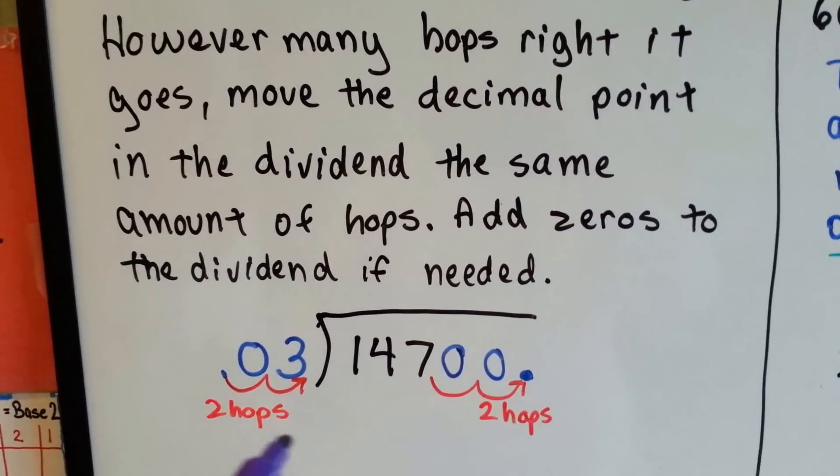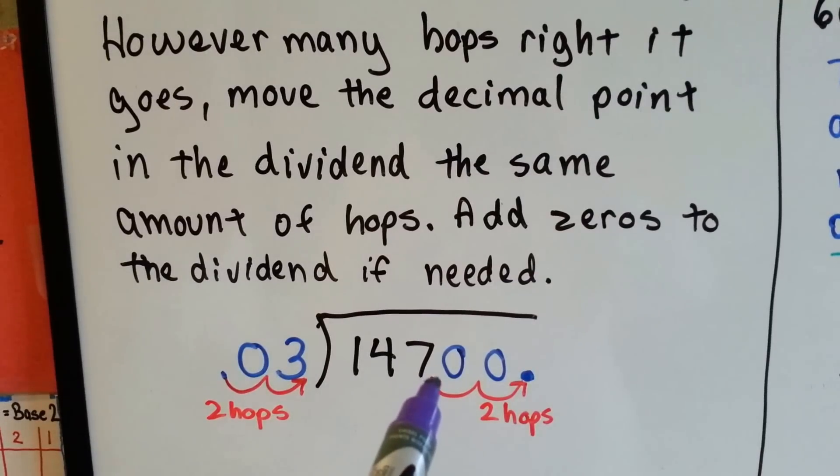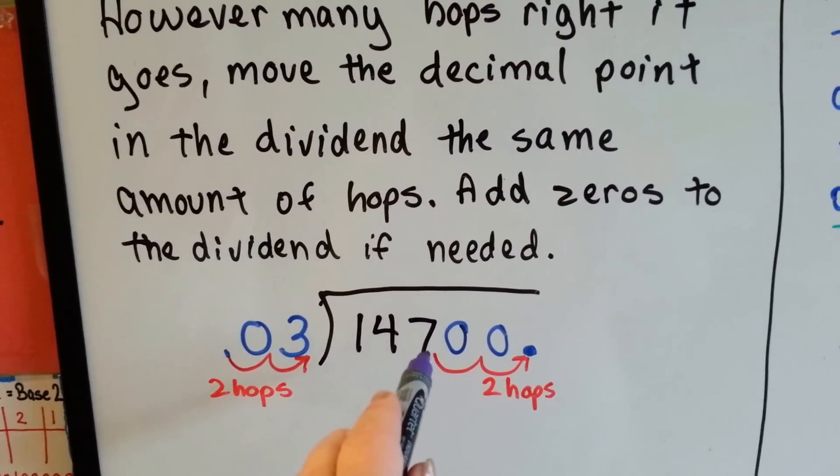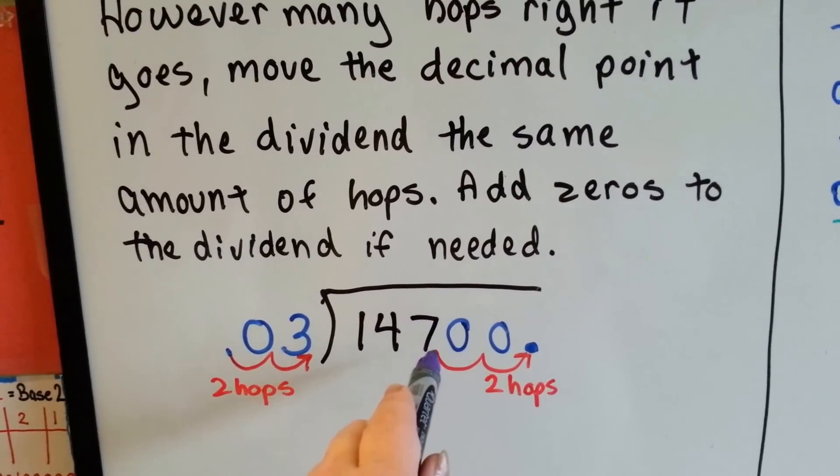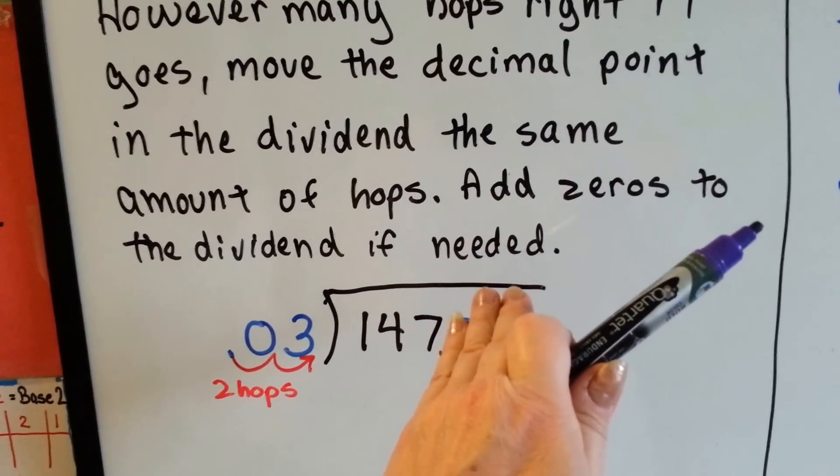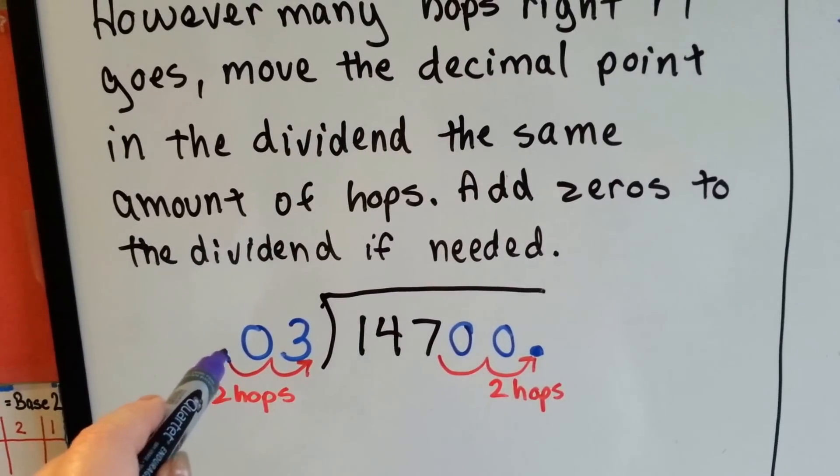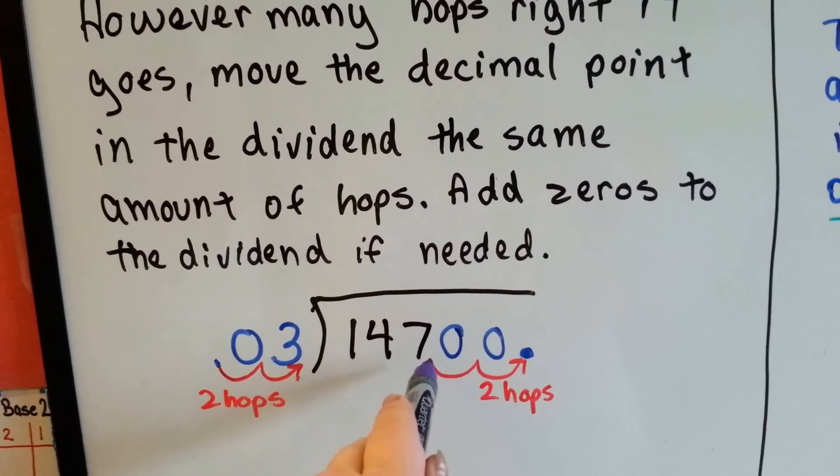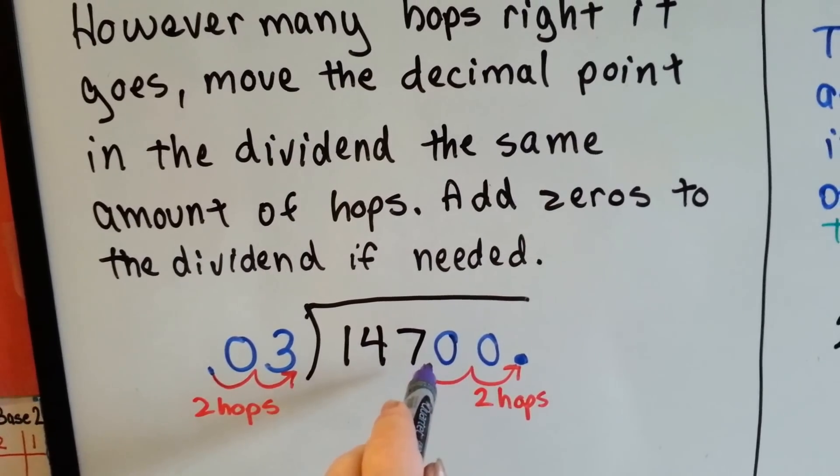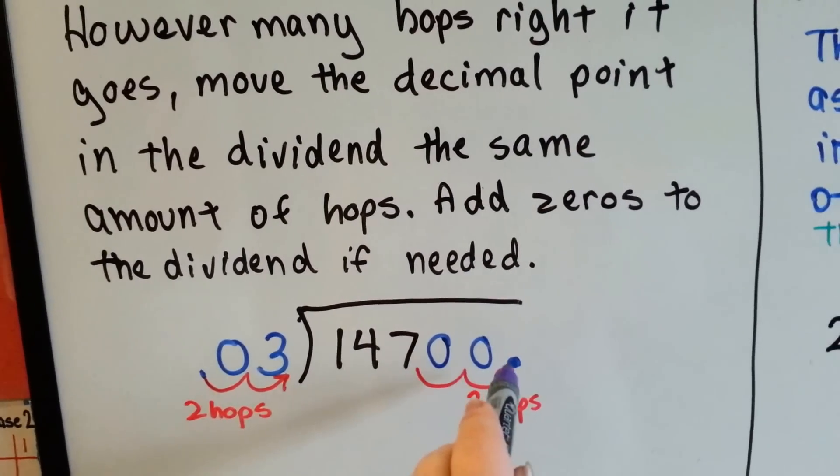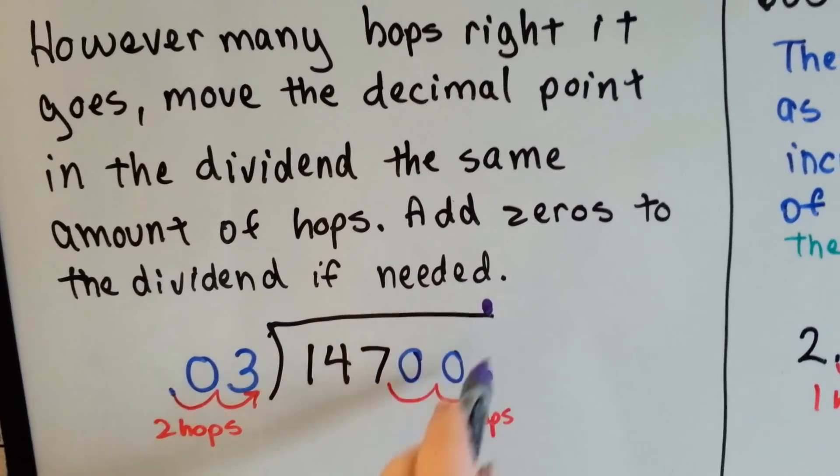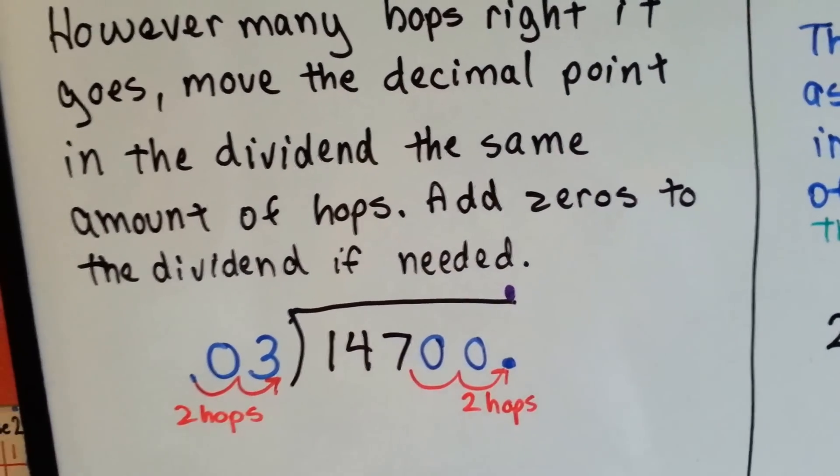So if you have 3 hundredths and it's going to go into 147, there's no decimal point in the dividend. There's an invisible one here behind the 7 if it was just 147. So by moving the decimal point in the divisor one, two hops, we have to create a couple of place values for the dividend, don't we? One, two hops. So the decimal point will go up here for the answer in the quotient. And we had to put zeros in there to hold the place, didn't we?